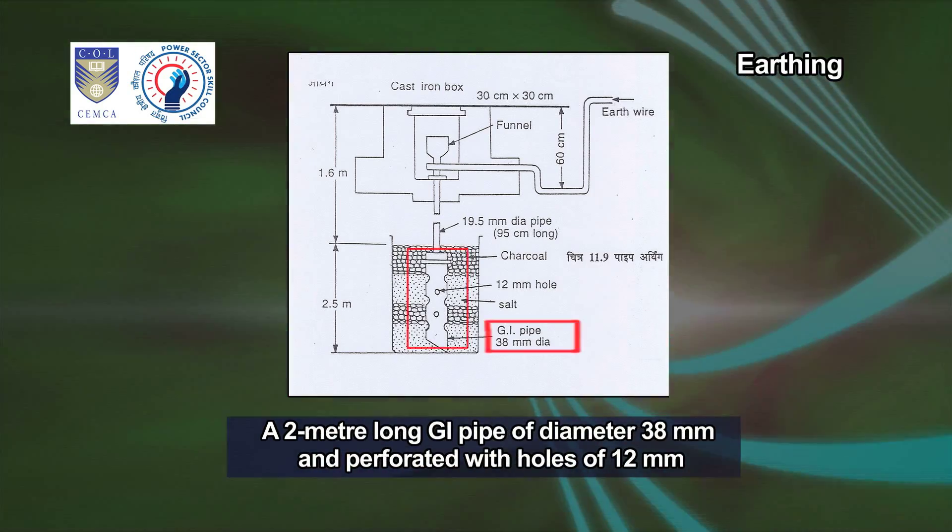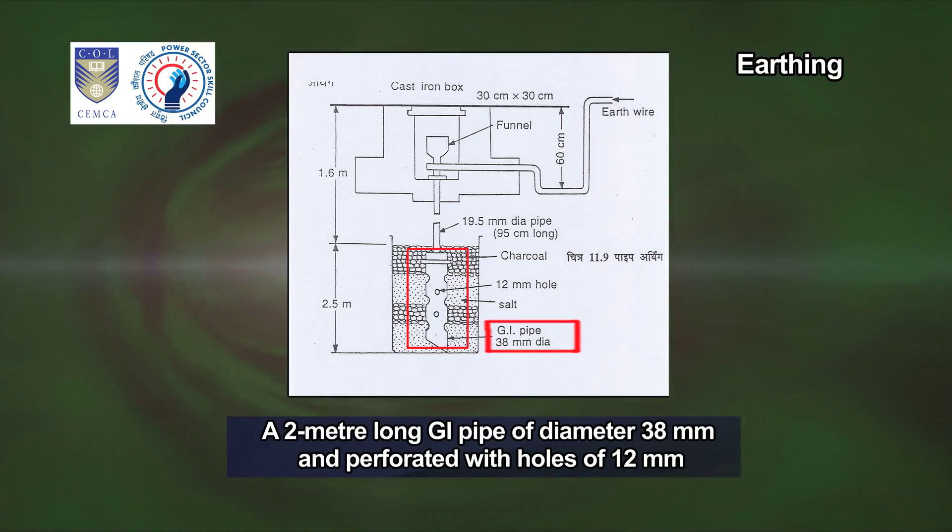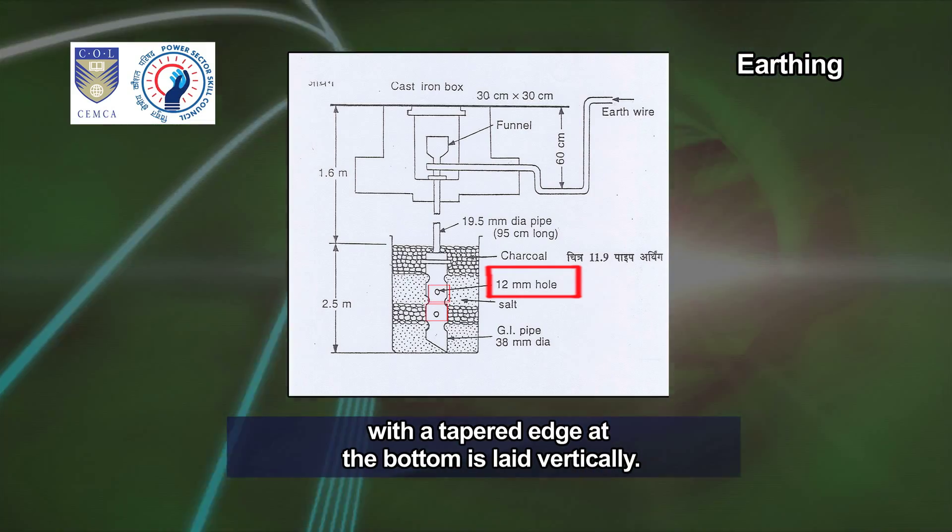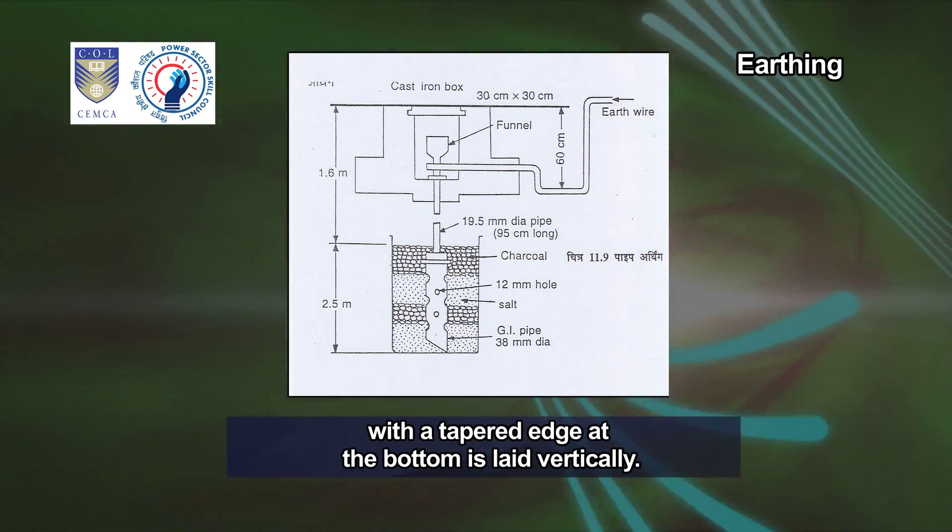A 2 meter long GI pipe of diameter 38 mm and perforated with holes of 12 mm with a tapered edge at the bottom is laid vertically.